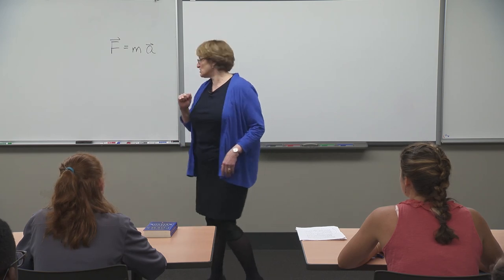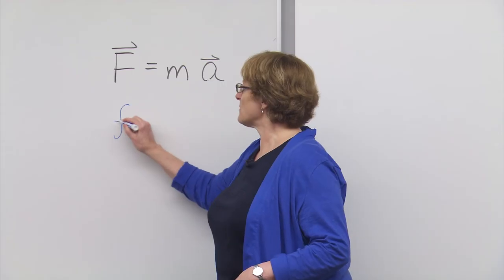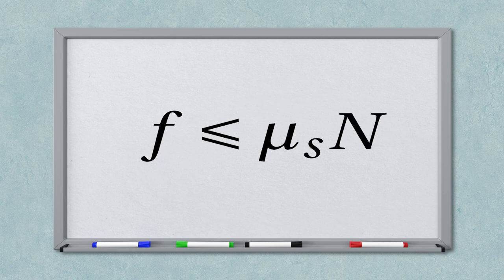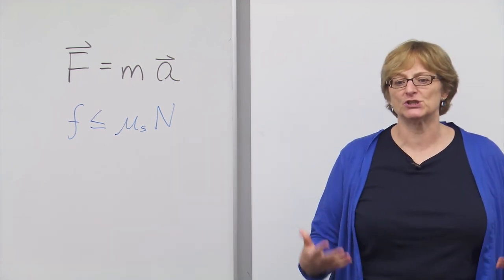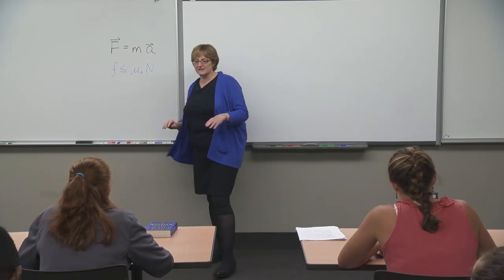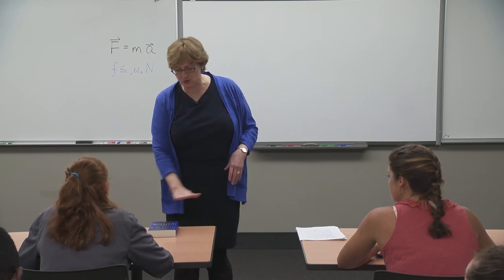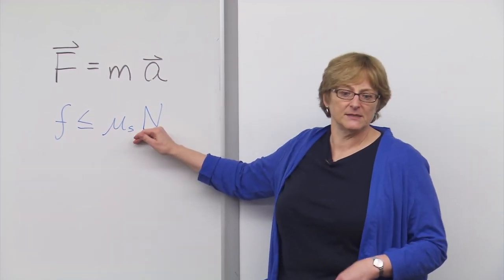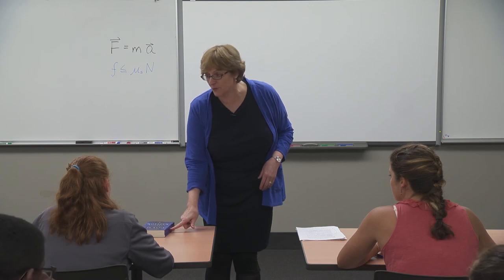The force due to friction — sometimes written with a lowercase f — is less than or equal to a coefficient of static friction times the normal force N. The word 'normal' in this context just means perpendicular to the surface. The frictional force is greater if the normal force is greater. So a heavy book is less likely to move when pushed with a given force than a light book.